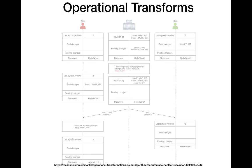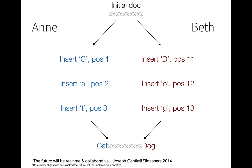There are two well-known approaches to collaborative editing. The first, and the one that came first, is called operational transforms. There's also a newer approach called CRDT, which I won't cover today. Now, imagine you're editing a document and you have Anne and Beth. Anne wants to insert 'cat' — she inserts C-A-T. At the same time, with some delay, Beth inserts 'dog'. We would like to preserve their intention and have the final document read 'cat dog'.